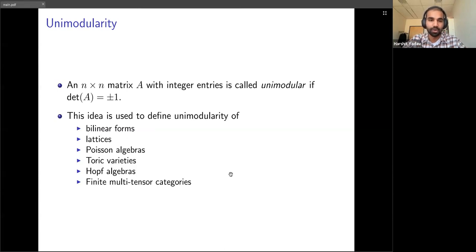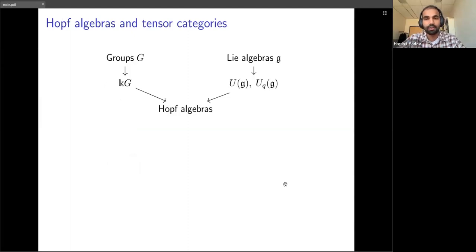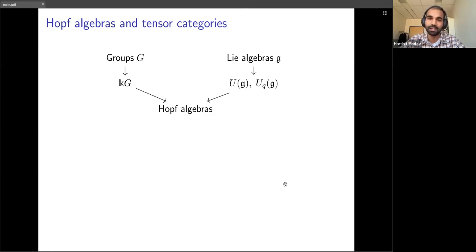My focus today is going to be unimodularity for Hopf algebras and multi-tensor categories. One can think of Hopf algebras as a generalization of groups and Lie algebras. Groups and Lie algebras are tangential in a certain sense, and Hopf algebras can be thought of as an average of these two.